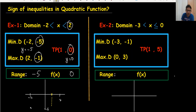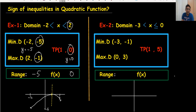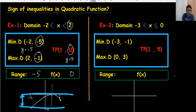Then we have (2, minus one) coming here. So this is the rough sketch. When we find the range, we need the maximum value and the minimum value — the range lies between them. The minimum value is minus five and the maximum value is zero.